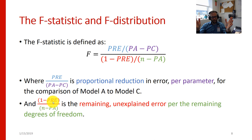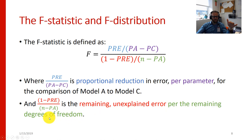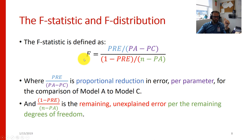We have our starting sums of squared errors, and that initial sum of squared errors changes as we go from model C to model A — that's what gives us the proportional reduction in error. So 1 minus PRE tells us how much error remains as a percentage, how much unexplained variance is there in our data, and how many remaining degrees of freedom do we have — essentially, how many additional parameters could we still add. We get a ratio of the variance explained per parameter proportional to the residual variance per remaining degrees of freedom. If we explain a lot of variance with very few parameters, F is going to be really big.